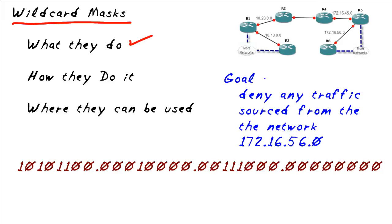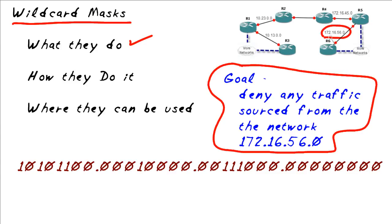One really great way to understand how a technology works is to see a practical application of it. So let's say we have a goal that was given to us by a manager that says, I want you to deny any traffic if it's sourced from the network 172.16.56.0. That's this network right here. And we want you to filter that, let's say, inbound on R2's interface right there. So we're going to have to create an access control list to do that. But how in the world do we write it?